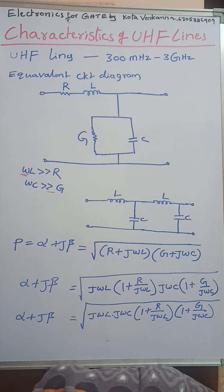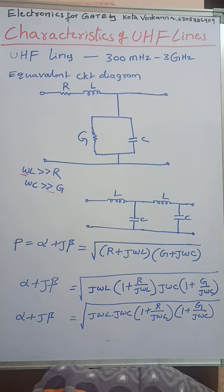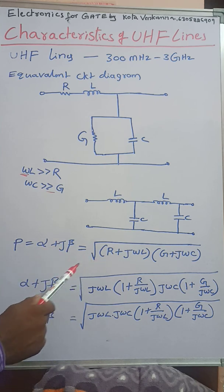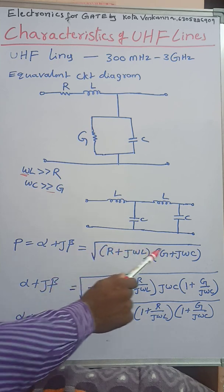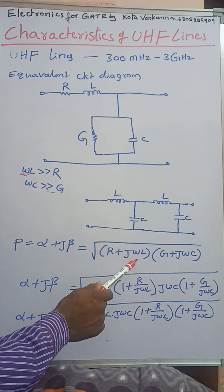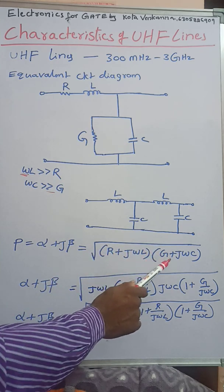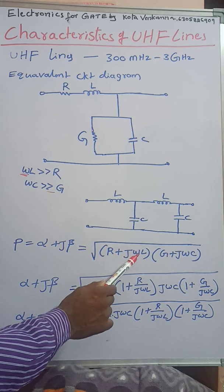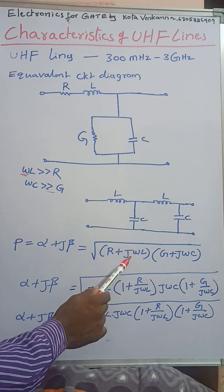Now we find the propagation constant equation. P, the propagation constant, is equal to alpha plus J·beta, where alpha is the attenuation constant and beta is the phase shift. That equation is equal to the square root of (R + J·omega·L) multiplied by (G + J·omega·C).